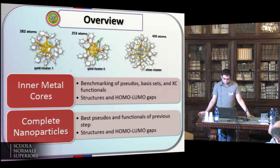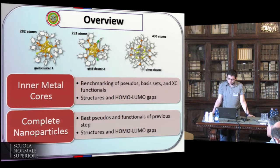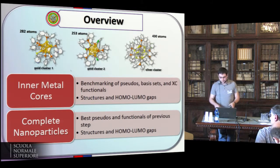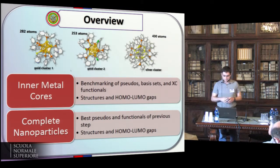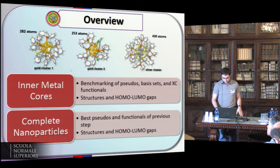Therefore, we performed some benchmarking on three nanoclusters: two made up of gold and one of silver. We tested five pseudopotentials and more than 20 exchange-correlation functionals. Our strategy was to fragment the nanoparticle into an inner core region and an outer region. We performed most of our benchmarking on the inner region and then applied the best combinations on the complete nanoclusters.